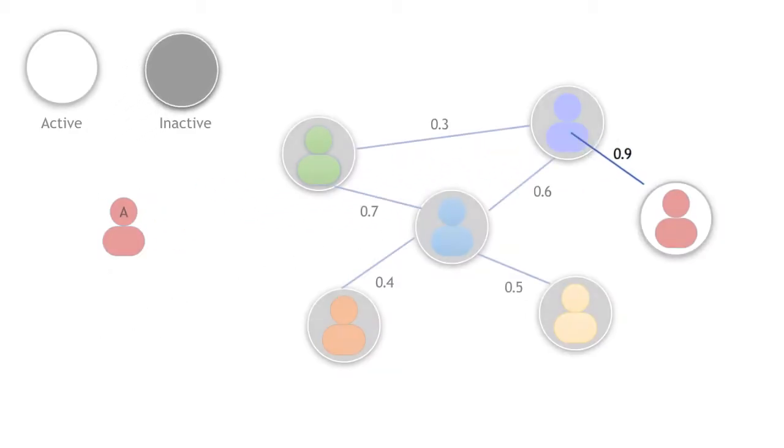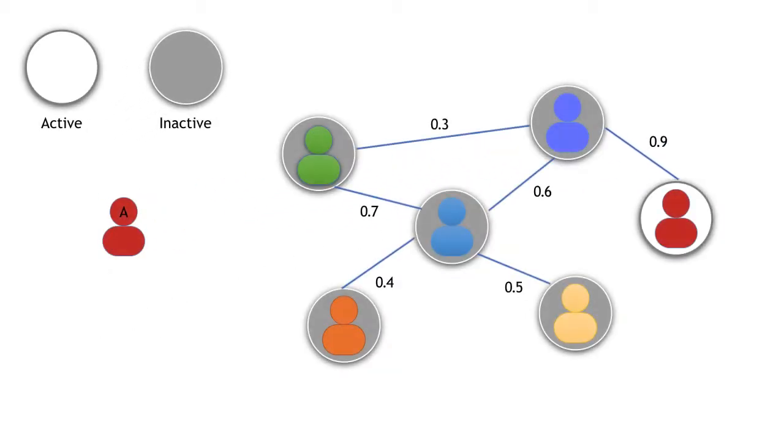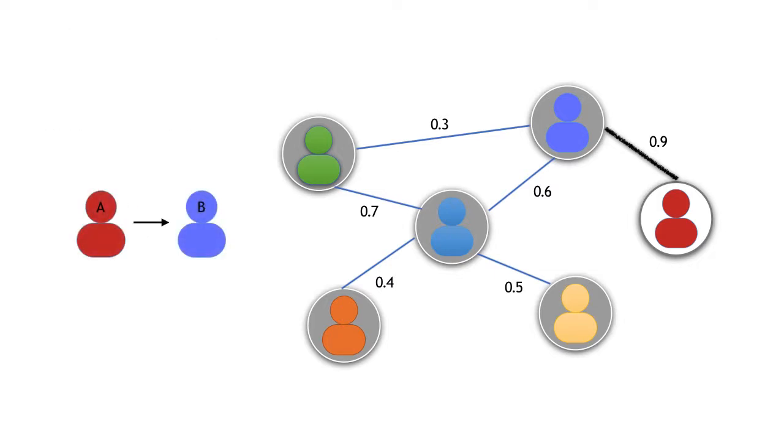Let's first look at an example of a single round influence graph. Node A is chosen as a seed, and its status is changed from inactive to active. Next, node A tries to activate its neighboring node B.